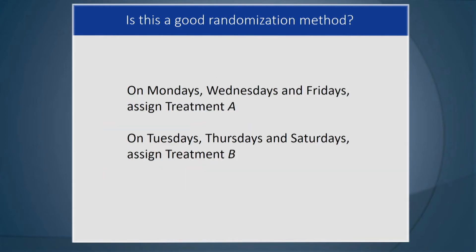Is this a good randomization method? On Mondays, Wednesdays, and Fridays you assign treatment A, and on Tuesdays, Thursdays, and Saturdays you assign treatment B. Sounds harmless, but it is not a good method. Mondays are right after the weekend, Fridays are right before the weekend, Saturdays are inside the weekend. We don't know whether the day of the week has anything to do with the treatment, recovery, or primary outcome, so we need to avoid that kind of randomization method.